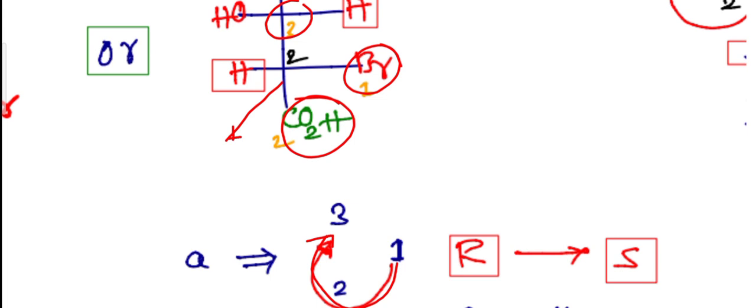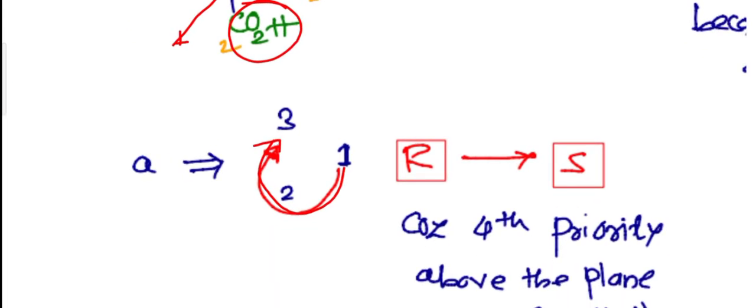It is like clockwise direction, but the fourth priority is just above the plane. That's why we have to reverse it, and the configuration will be S. Because fourth priority is above the plane, R will convert to S.